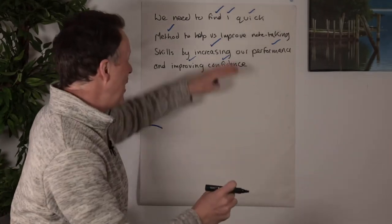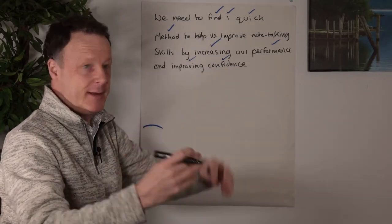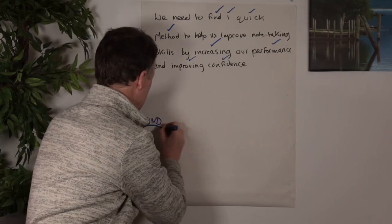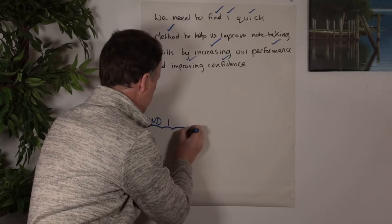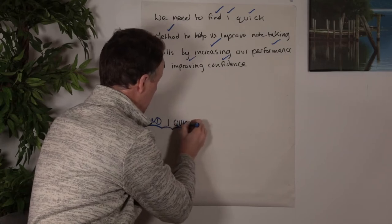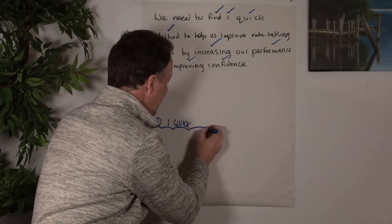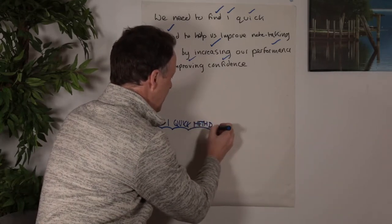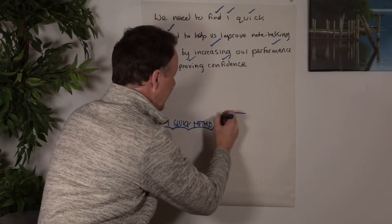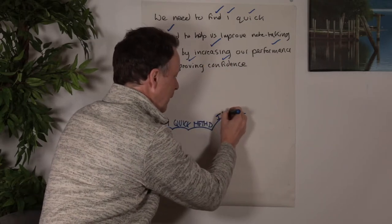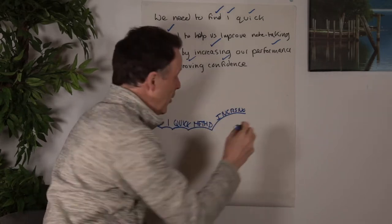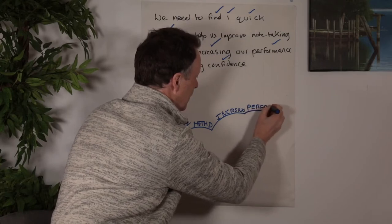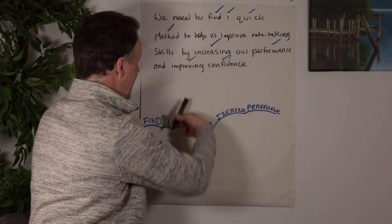So by deep processing, what happens is you split all the knowledge into single units and then reconnect it. So here I'd go find one and then quick method. I'll start abbreviating and in reality, this is what I would do because it speeds everything up. So method, what have we got, increasing, and then performance, improving confidence.